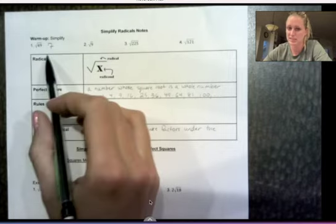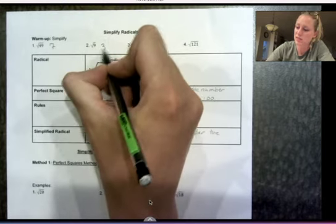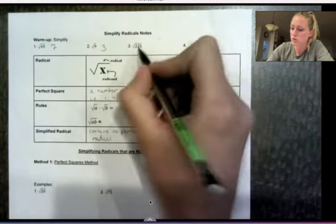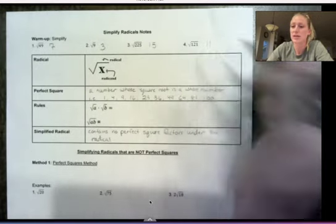So the answer to that is 7. So the square root of 49 is 7 because 7 times 7 equals 49. So it has to be the same number. That's unique about square roots. So what number times itself is 9? 3. Square root of 225 is 15. And 121 is 11.